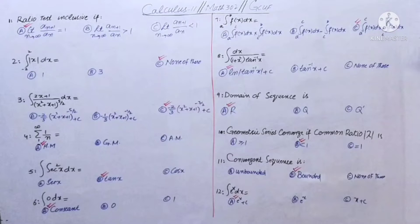Ratio test inclusive if. There are total 3 options available. Number 1 is limit n approaches to infinity a_n+1 over a_n equal to 1. Limit n approaches to infinity a_n+1 over a_n greater than 1. Option C is limit n approaches to infinity a_n+1 over a_n less than 1.